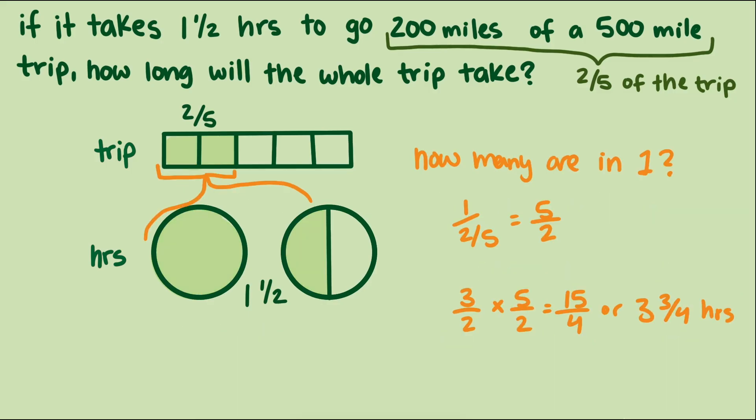In our second approach, we divided two-fifths into one to see how many of the portion of the trip is needed to complete one whole trip. But one divided by two-fifths is just the reciprocal five halves, and I'll multiply that by the time per two-fifths of a trip to get the total amount of time in one whole trip.